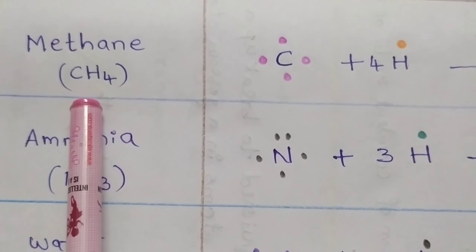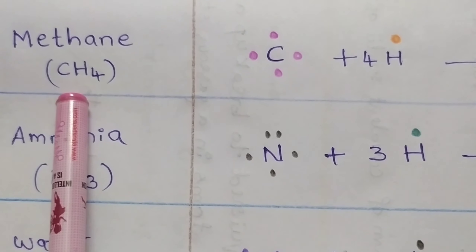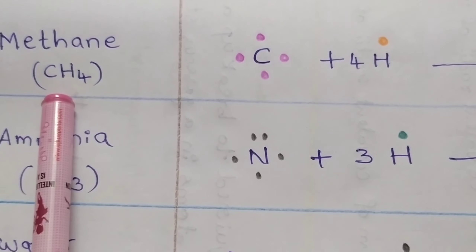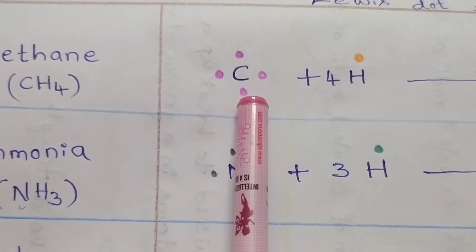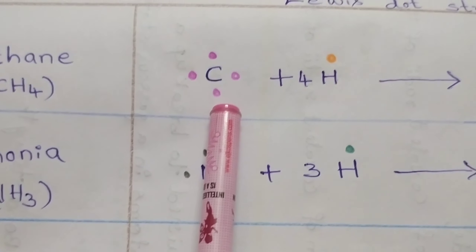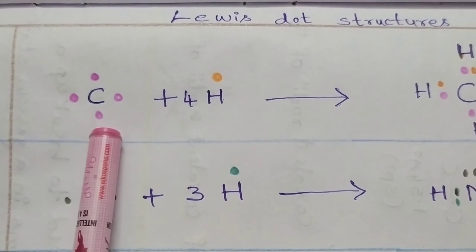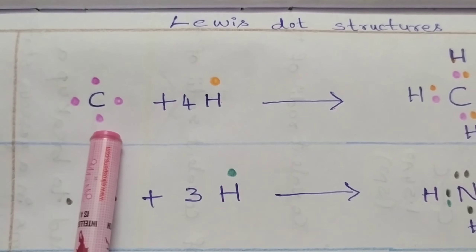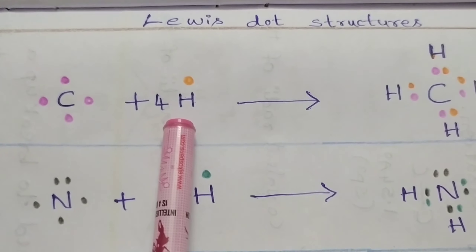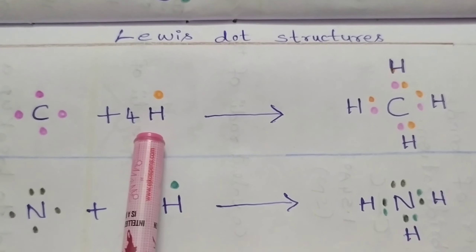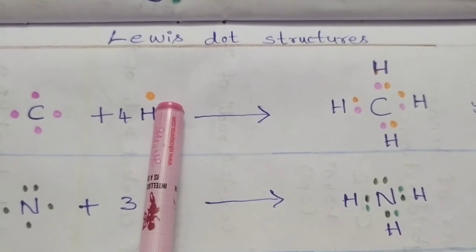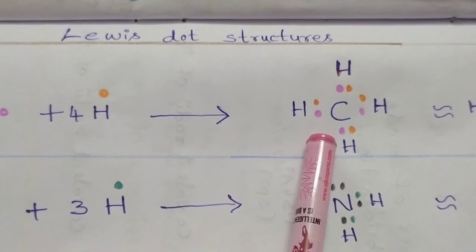First, methane, formula CH₄. In the methane molecule, carbon is the central atom. This carbon contains four valence electrons. In order to get an octet configuration — that means eight electrons in their outermost orbit — this carbon reacts with four hydrogen atoms, which each contain one valence electron, and forms the methane molecule.